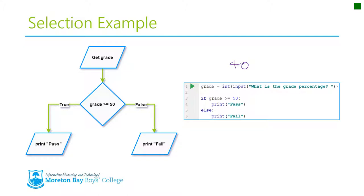So instead of executing this code here, it will come down and go into the else. It will execute this code here and print fail. Again, don't worry too much about the detail. We will cover this in class. But just to give you an idea, that's how selection works in code.